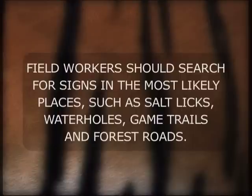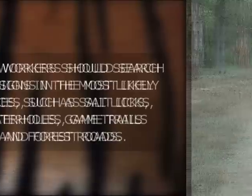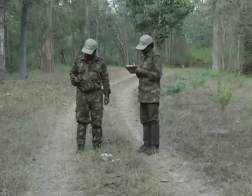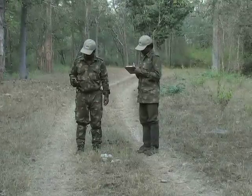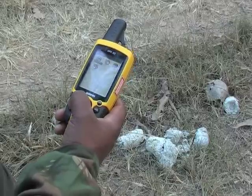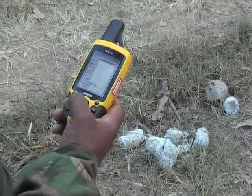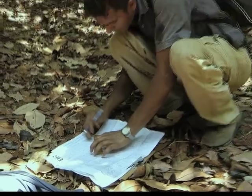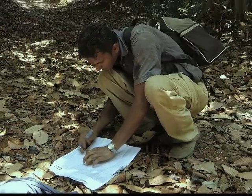Field workers should search for signs in the most likely places, such as salt licks, water holes, game trails, and forest roads. Whenever signs are encountered, the location should be recorded with the help of a handheld GPS unit. When a GPS unit is not available, one can use a map and compass technique for recording the location.